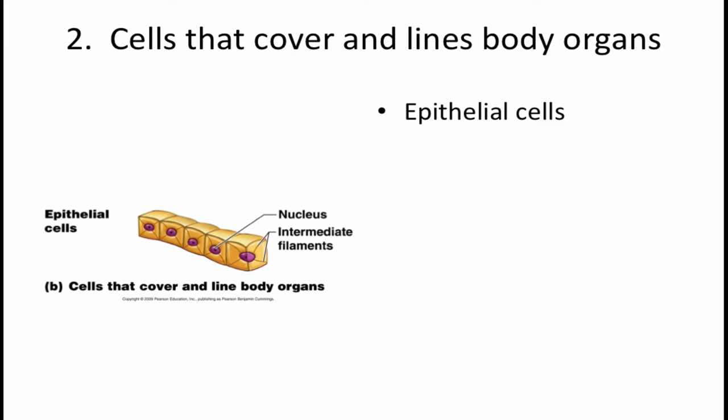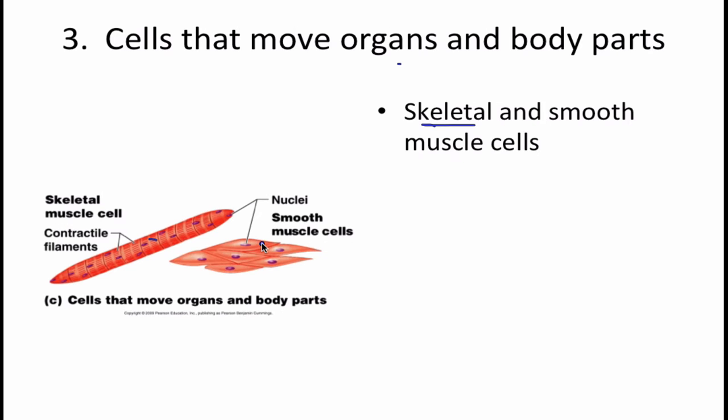The second type of cells covers or lines body organs — epithelial cells or skin cells are an example. Next are cells that move organs and body parts, such as skeletal muscle cells and smooth muscle cells. They're all shaped differently and have different functions.